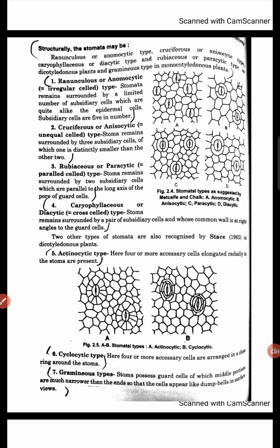Second type: Cruciferous or Anisocytic. Here, stomata are surrounded by three subsidiary cells, and one is smaller compared to the other two.